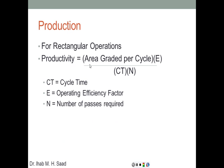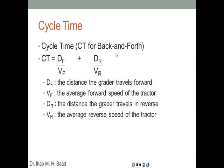For rectangular operations, productivity equals the area graded per cycle times efficiency (E), divided by cycle time times the number of passes required. The cycle time must be calculated. For the back-and-forth method, cycle time equals df over vf plus dr over vr — where df is the distance traveled forward, dr is the distance traveled in reverse, vf is the average forward speed, and vr is the average reverse speed.